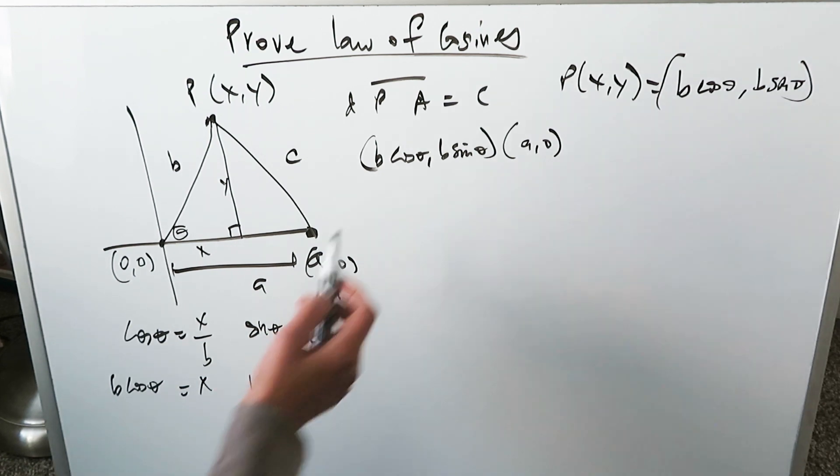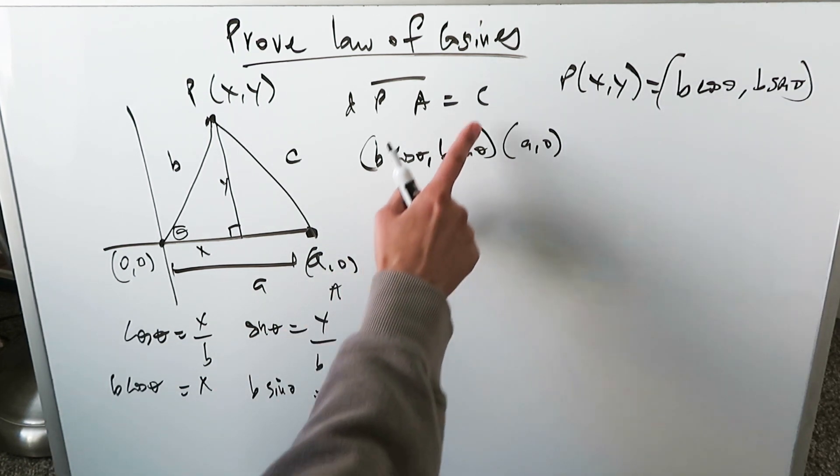You run this through your distance of a segment formula. Distance here, which would be the distance of the C, which is what we're determining would be equal to the square root y2 minus y1 whole square.